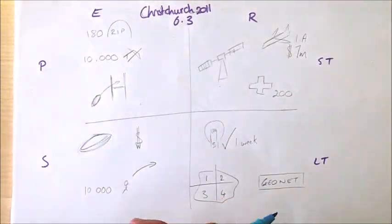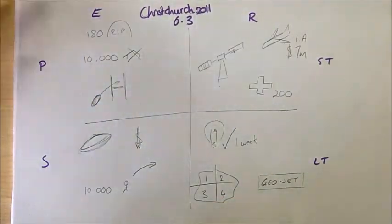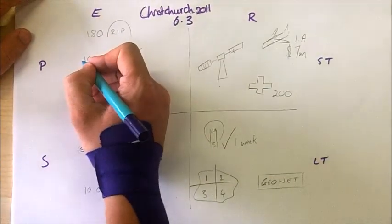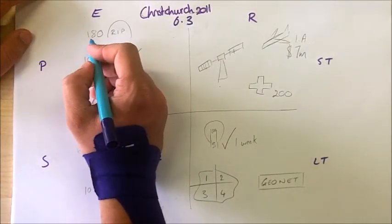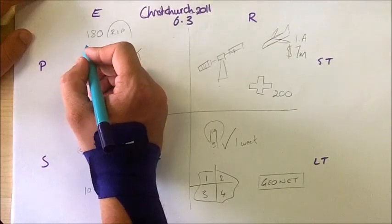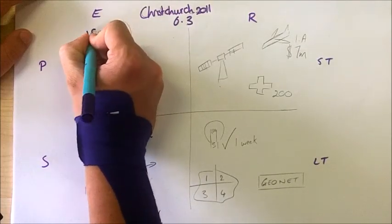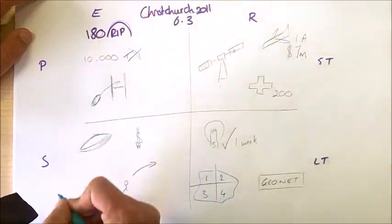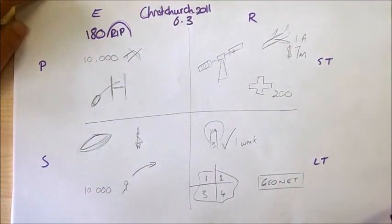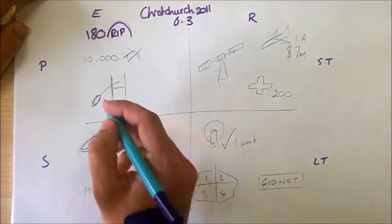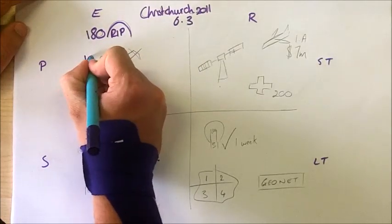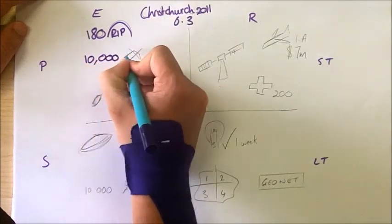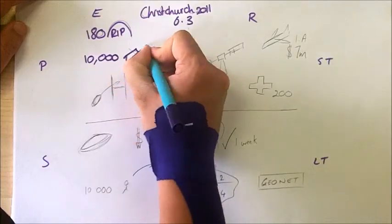So let's start off with the primary impacts then. First off, obviously, any natural hazard, probably the most natural impact to talk about is a number of deaths. So in the Christchurch, we're looking at 180 fatalities. These were predominantly caused by collapsing buildings, of which there was over 10,000 in Christchurch.